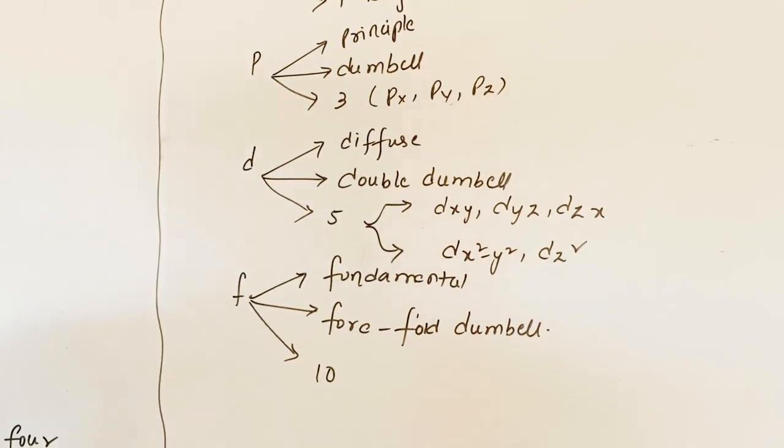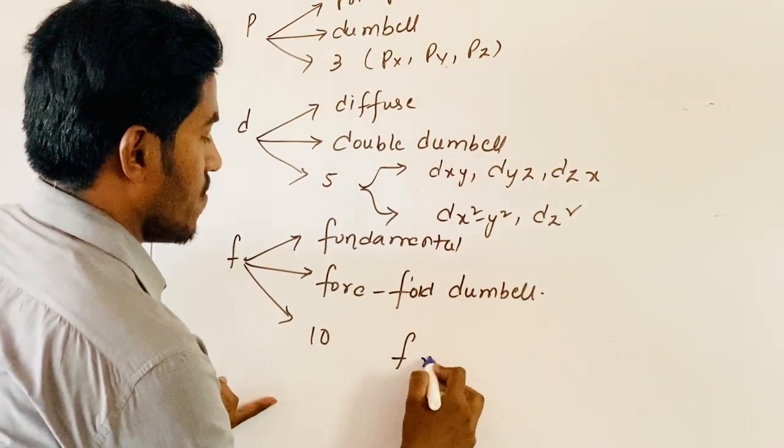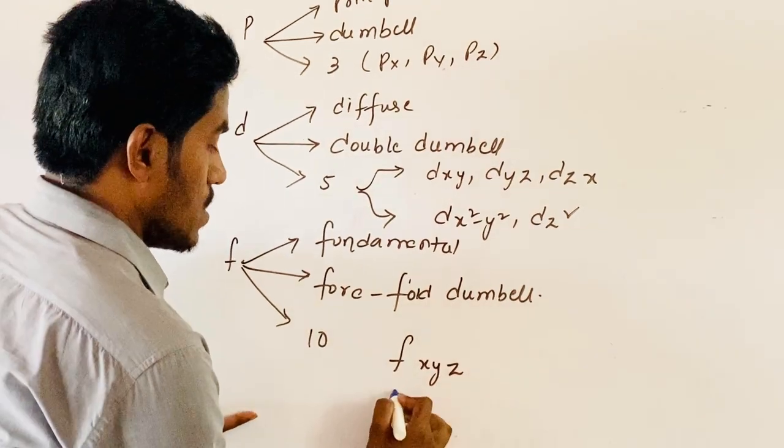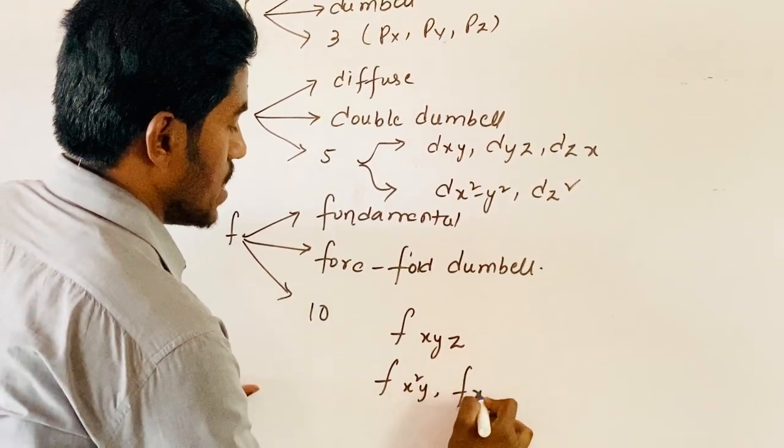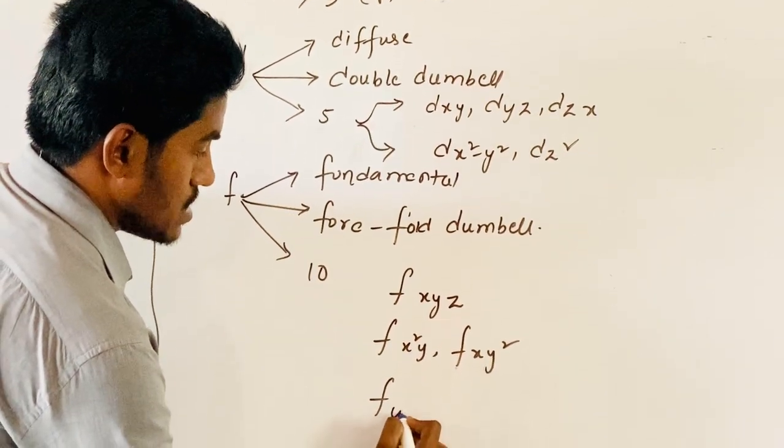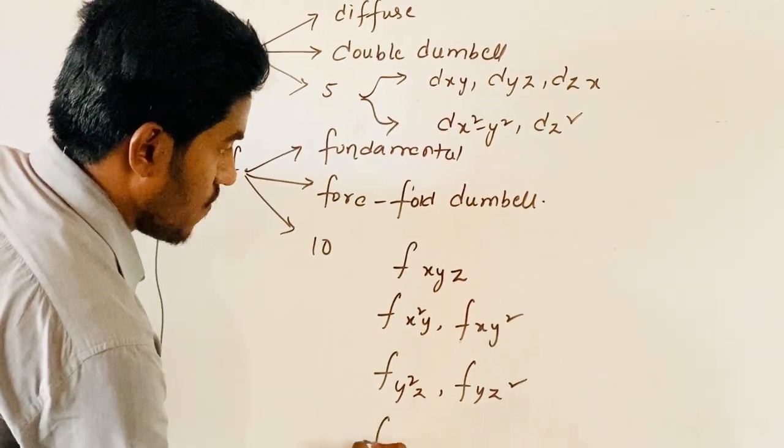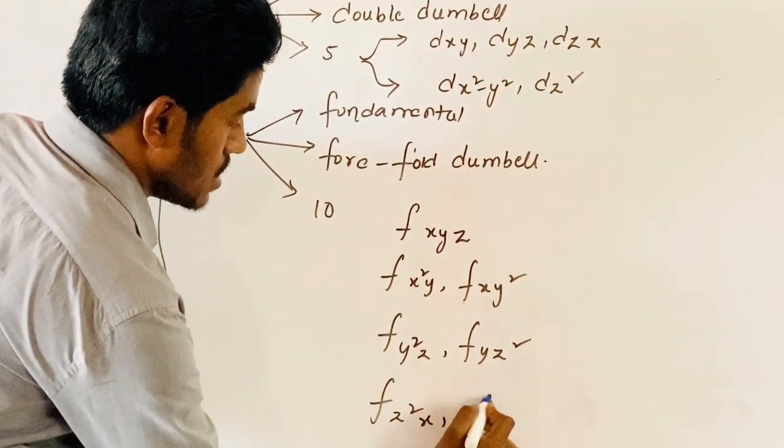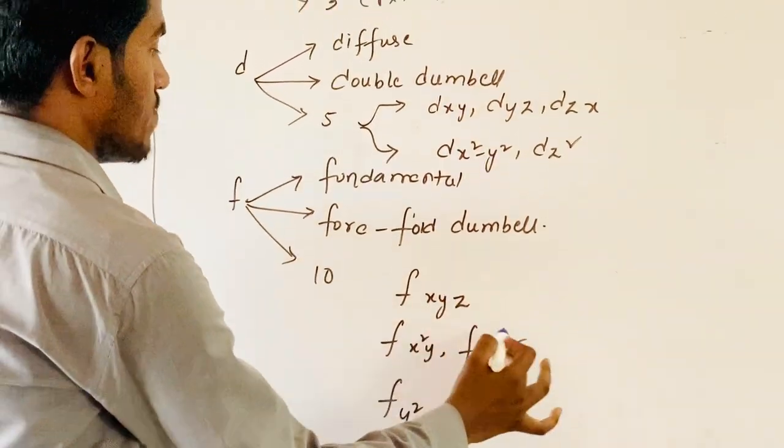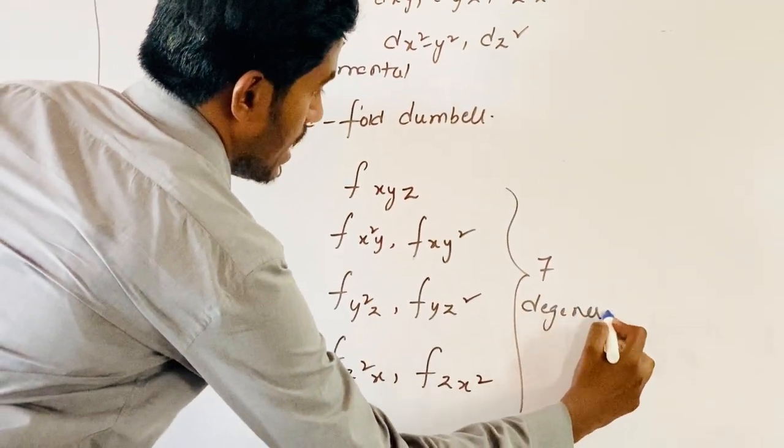Coming to F-orbital, it may have 7 orbitals. The F-orbital can have imaginary shape represented by F of XYZ, F of X-square Y and XY-square, F of Y-square Z and YZ-square, F of Z-square X and ZX-square. The total availability of F-orbital is 7 orbitals.